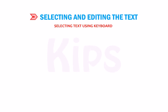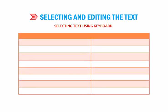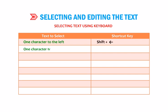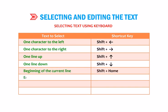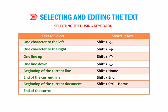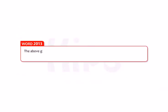Let's learn how to select text using the keyboard. Shortcut keys: Shift+Left Arrow — one character to the left; Shift+Right Arrow — one character to the right; Shift+Up Arrow — one line up; Shift+Down Arrow — one line down; Shift+Home — beginning of the current line; Shift+End — end of the current line; Shift+Ctrl+Home — beginning of the document; Shift+Ctrl+End — end of the document. These methods also work in Word 2013.